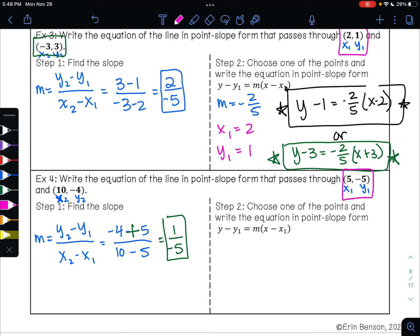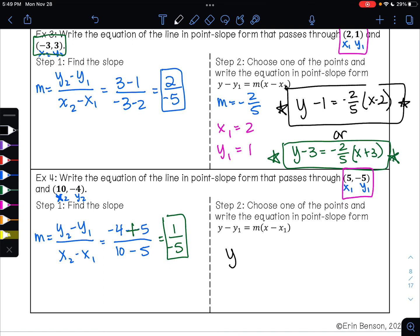If I pick this point right here, then my equation will be y minus negative 5 so y plus 5 equals negative 1/5 times x minus 5. If you pick the other point, so now if I pick this point right here, then that equation would be y plus 4 is equal to negative 1/5 times x minus 10. Both of these are correct. If you were to graph both of these lines, you would get the same line.